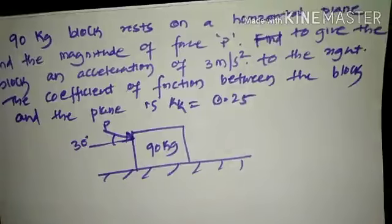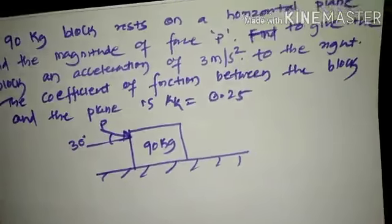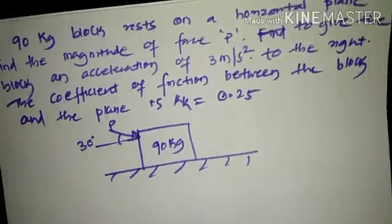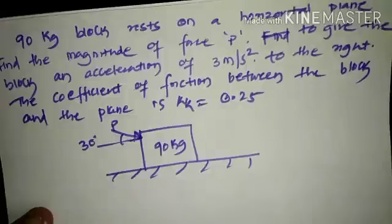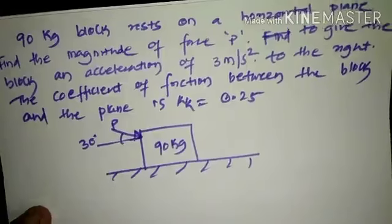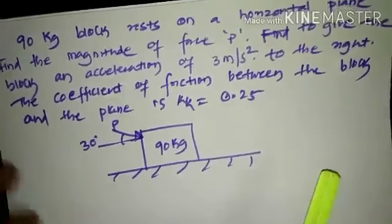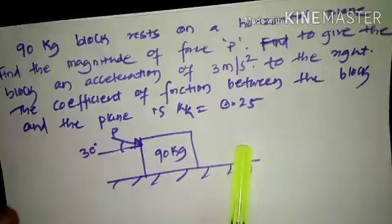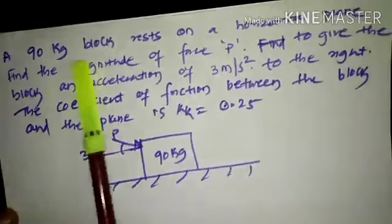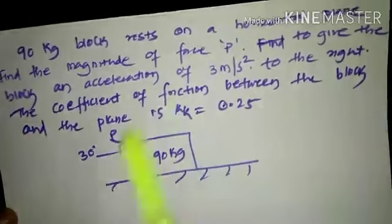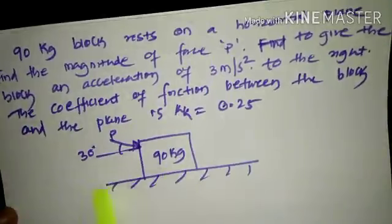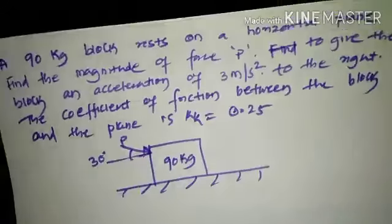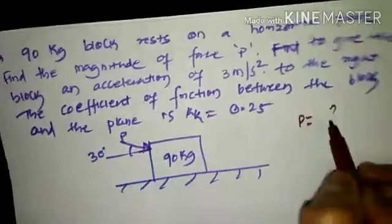Welcome to this session on the third problem related to kinetics. Here, a block has been placed on a horizontal surface and the mass of the block has been specified. The problem statement says it's a 90 kg block resting on the horizontal plane. Find the magnitude of the force P.